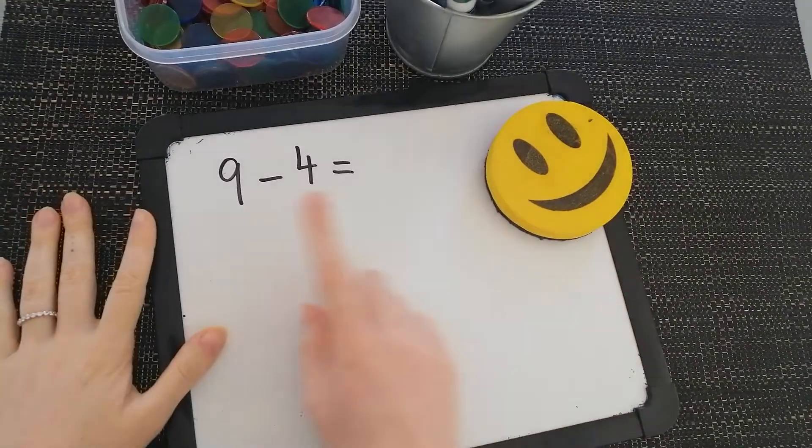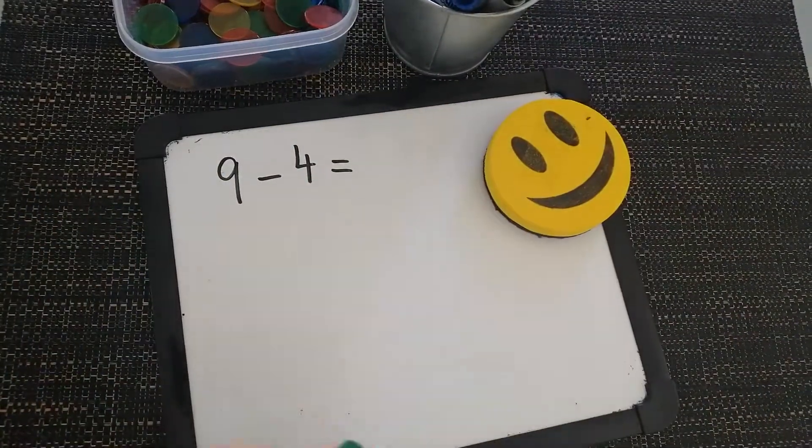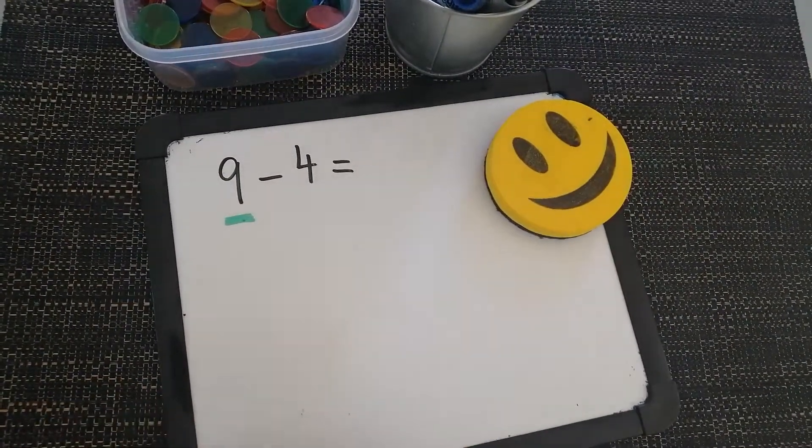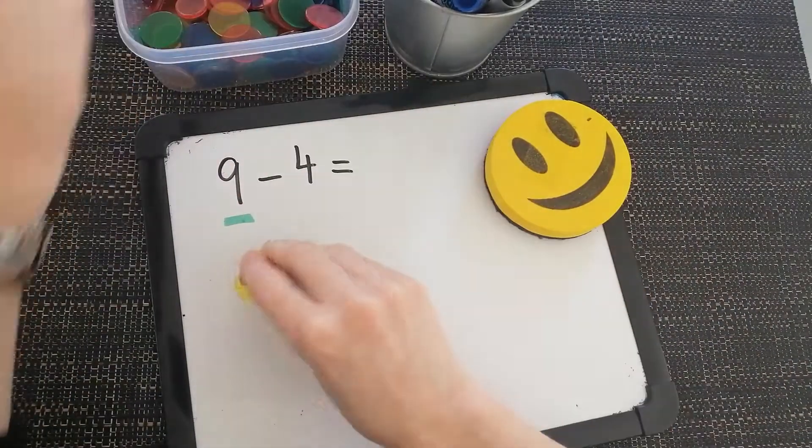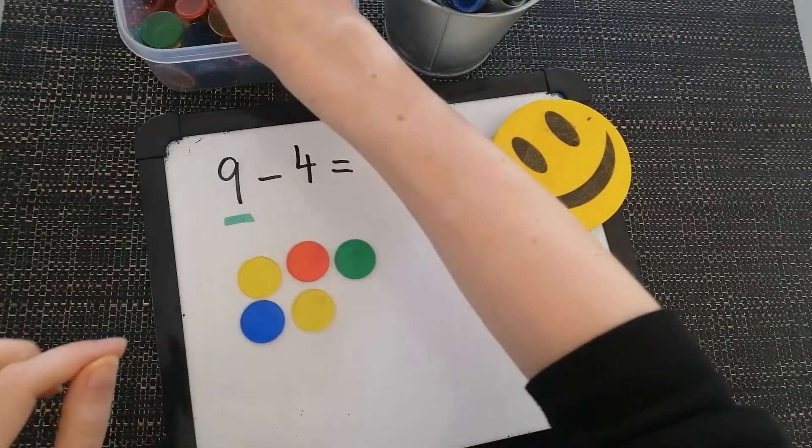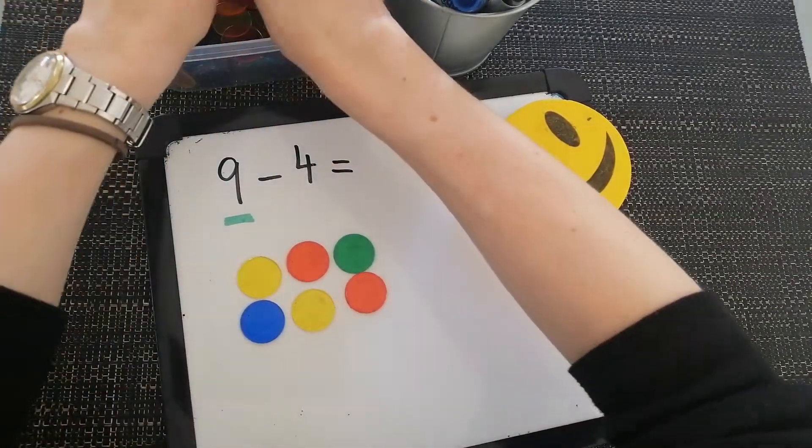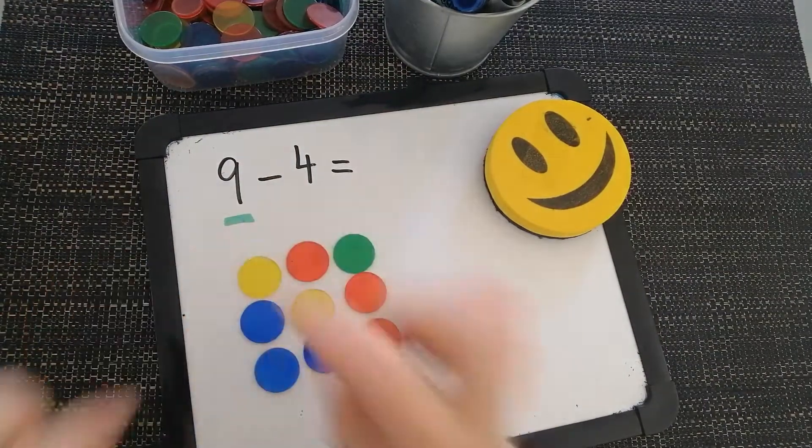My next question says 9 take away 4. So I need to start by getting my big number of counters out, the number at the beginning of my sentence. 1, 2, 3, 4, 5, 6, 7, 8, 9. That is my starting number.